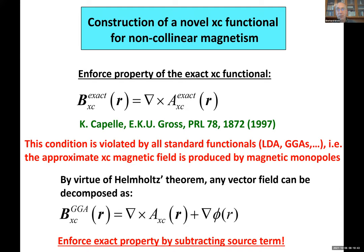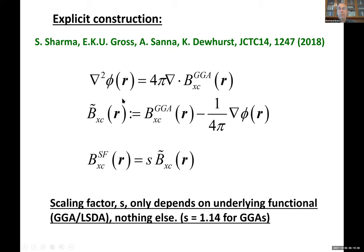The fix uses Helmholtz's theorem: any vector field — for example the B_xc in GGA — can be written as the curl of something plus the gradient of a scalar. We enforce this exact property by subtracting the gradient term. We take the divergence of the equation: the divergence of the curl vanishes, leaving a Laplacian, so we end up with a Poisson equation for the scalar field φ(r). Since every Kohn-Sham code has a Poisson solver, this is easy. Once we have φ, we subtract its gradient from the ordinary GGA B_xc.